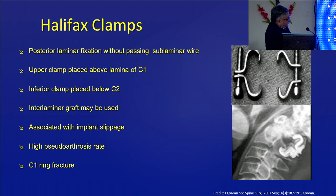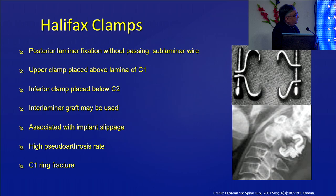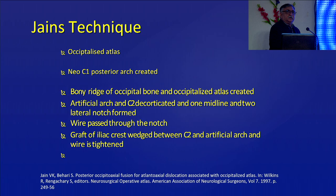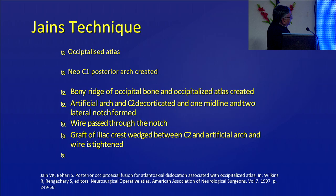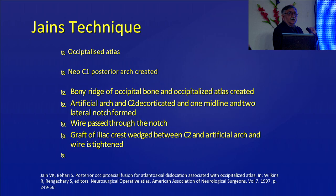Then came Halifax clamps: one clamp on C1, one under C2, fixed together like a claw. This worked well but wasn't possible if the C1 ring was fractured or there was anatomical malformation. Sometimes the screw became loose or the hook slipped off. From India, in cases of occipitalized atlas, Dr. Jain from SGPGI described making an artificial arch — drilling holes near the foramen magnum to fashion a kind of C1 arch, then fixing that false arch to C2. This was published in 1997 and worked well even in occipitalized atlas.